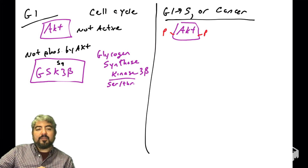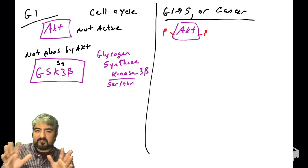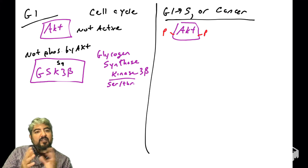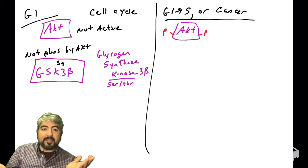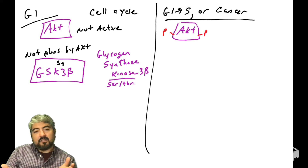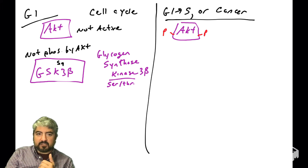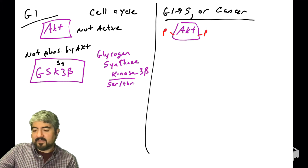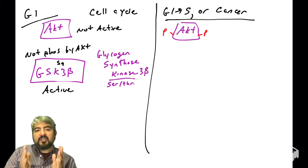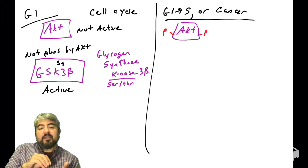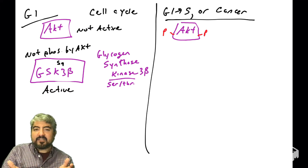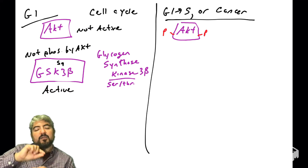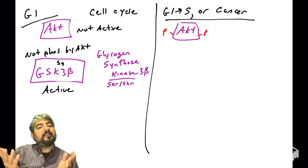I want you to recall that in cells that are in G1, AKT is not phosphorylated and not active, and so GSK3-beta is not phosphorylated by AKT. You never know until you're told what phosphorylation does to a protein — it's not a one-to-one prediction. I'll tell you here that when GSK3-beta does not have a phosphate group on serine 9, it is in its active state. Phosphorylating GSK3-beta inactivates it, so when it is not phosphorylated, it is active.